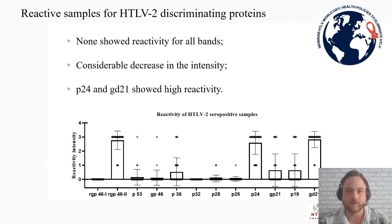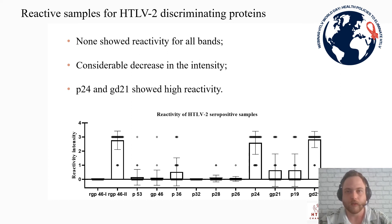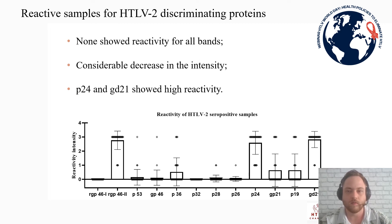Among the type 2 samples, no tests showed reactivity for all bands, with a considerable decrease in the main intensity index to less than 1, including lower reactivity for P28. Exceptions were P24 and GD21, which showed high reactivity values.